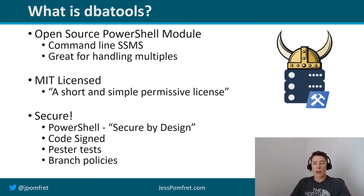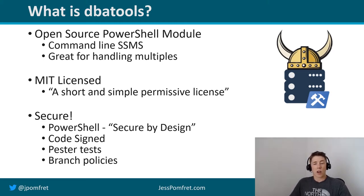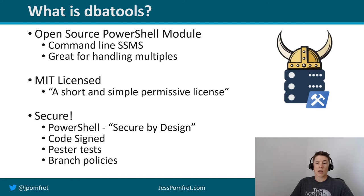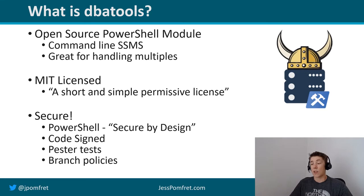The DBA Tools team uses branch policies in GitHub where the code is hosted. Everyone will create a PR with new code or changes, submit it to the dev branch, and it'll be reviewed by someone else to make sure it meets all standards and all pester tests pass. Once it's past that, it will be merged from the development branch into the main branch, which is what's published to the PowerShell Gallery. So there are two steps for any code to get into DBA Tools, which adds that extra safety net.